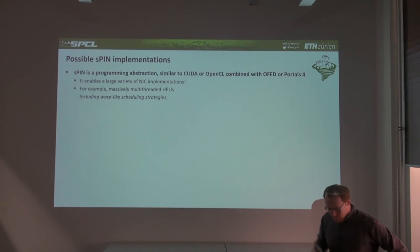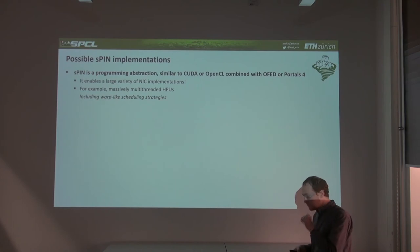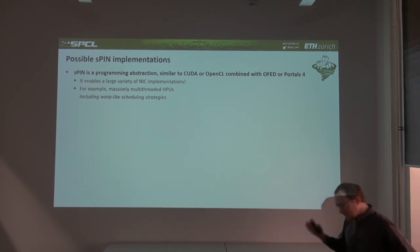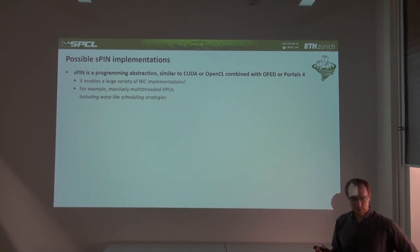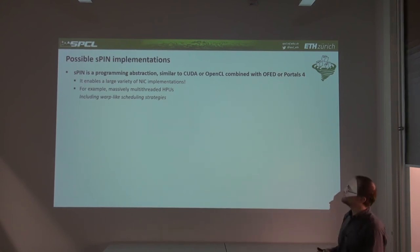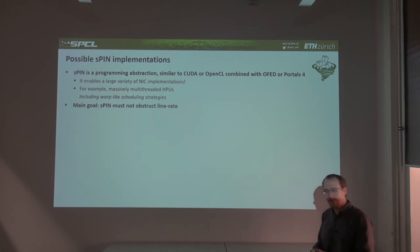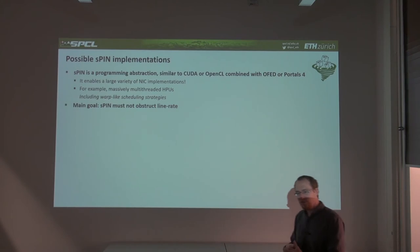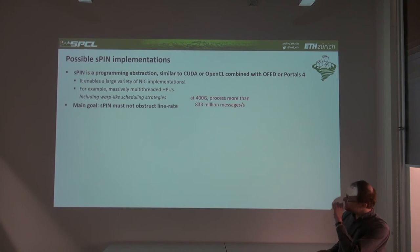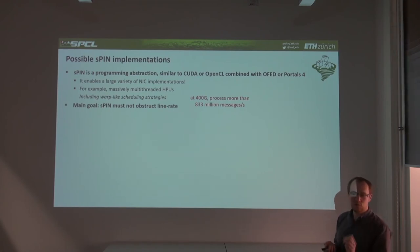SPIN as proposed is not a particular implementation but a programming framework — an abstract device architecture and abstract machine model, similar to CUDA, OpenCL, or OFET in Portals 4 — enabling many different device implementations, just as CUDA enables many GPU types. The main goal is to never obstruct line rate. At 400G, that's nearly a billion messages per second. Using Little's Law: assuming 500 instructions per handler at 2.5 GHz, we'd only need 25 KB of memory in the NIC registers.